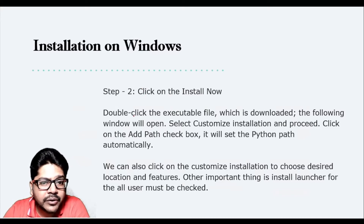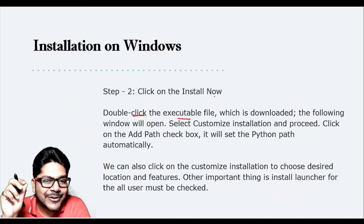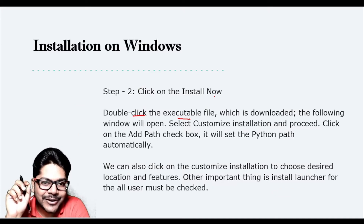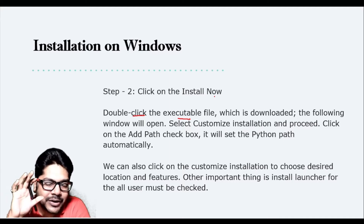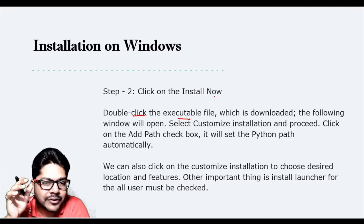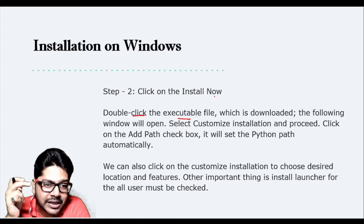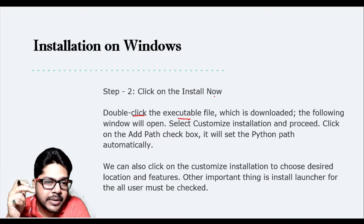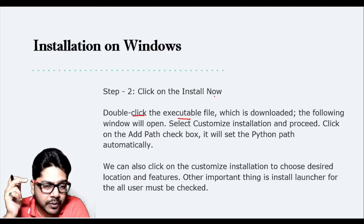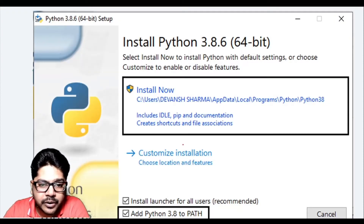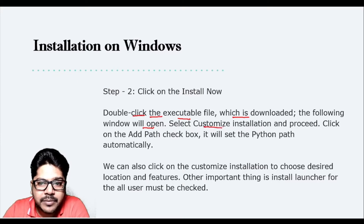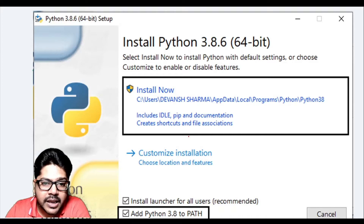Once downloaded, double-click the executable file. I'm making this tutorial because sometimes people are not able to complete the setup for one reason or another. If you still have issues, write in the comment box or reach out in the Telegram or WhatsApp group. When you double-click the executable, a window will open.